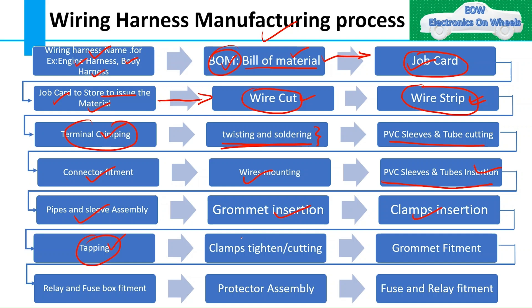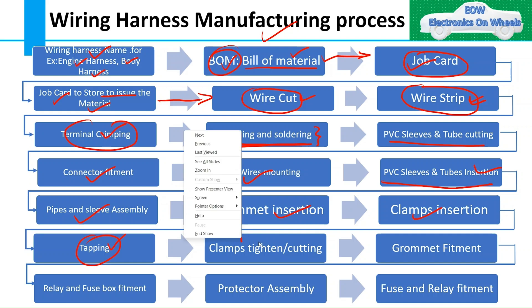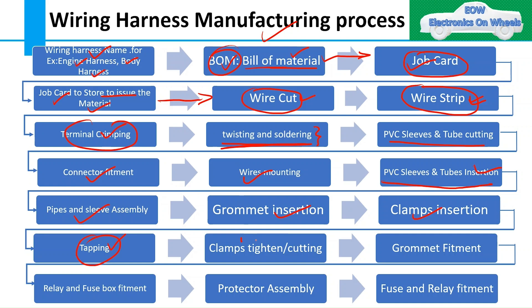Then we remove the extra or unnecessary hanging parts of clips and clamps by cutting them. Coming to fitment of different parts — grommet, relay box, fuse box — we need to make sure that all these parts are fitted as per drawing specification. Finally, you check all fuses and relays are inserted as per their ratings mentioned in the 2D drawing. Electrical tests are conducted to ensure each wire is correctly connected and there are no shorts, opens, or miswirings. Continuity testers or multimeters are used here.